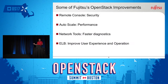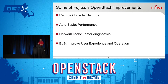I'm here today to talk about a few of our OpenStack improvements that we've added to K5 to make it scale and do some of the things we wanted. One of the first things we did was add a remote console and really improve the security for it. We did auto scale for performance, network tools, and improvements to the load balancer.